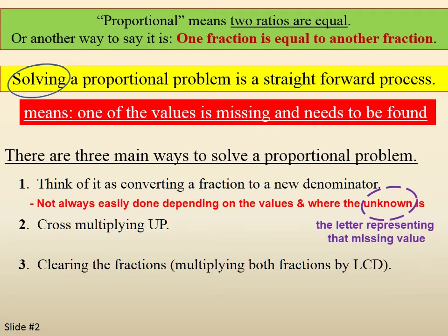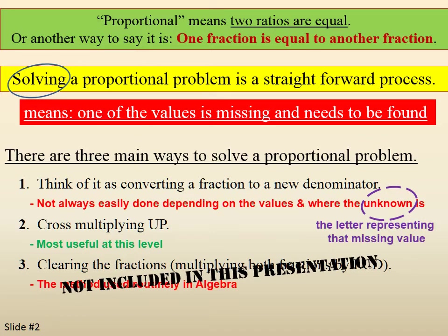Converting a fraction to a new denominator is not always easily done, depending on the values and where the unknown is. Cross-multiplying up is the most useful method at this level. Clearing the fractions is the method used routinely in algebra. We're not going to talk about it in this presentation - there is another presentation on clearing fractions.